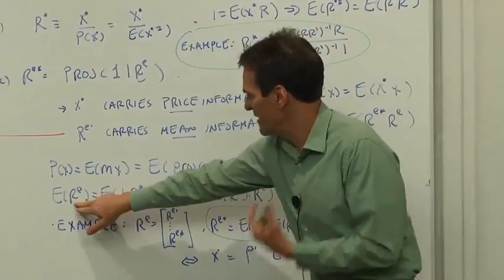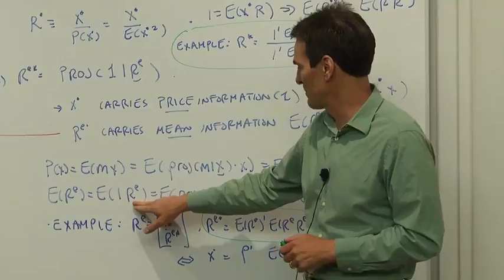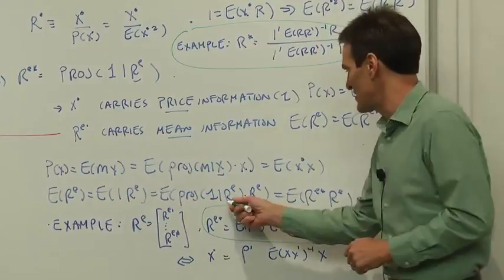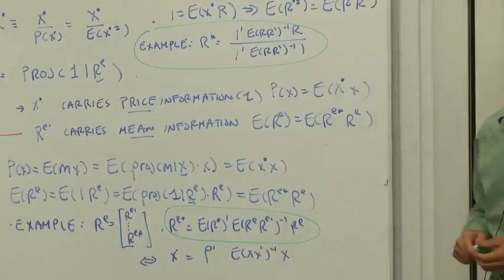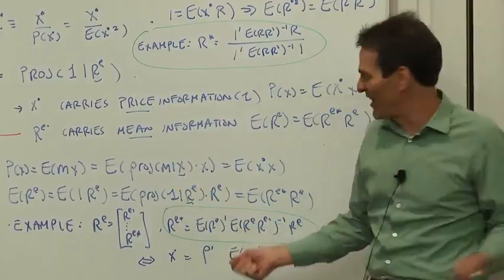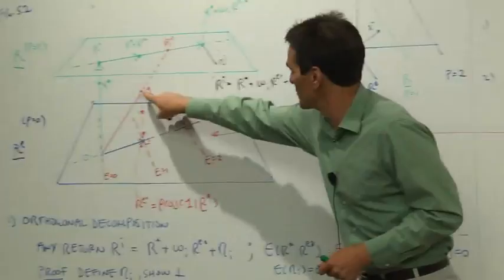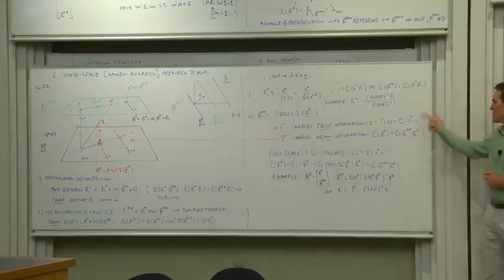Let's generate means in the same way. An expected mean excess return is the expected value of 1 times the excess return. That's the same as the expected value of projection of 1 onto the payoff space, onto the expected return space times the expected return. And that of course is the definition of r e star. This may seem a little weird, a regression with 1 on the left and excess returns on the right. But that's exactly what we want. We want the set of excess returns, the excess return that is closest to 1.